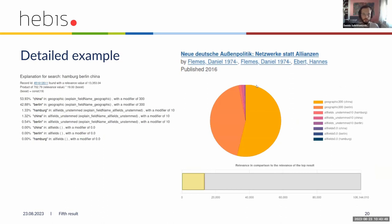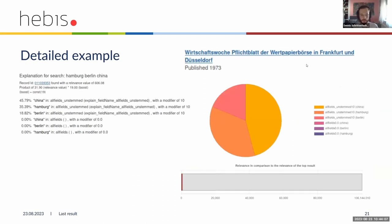The next one has two fields that are very important: geographic, with China and Berlin. But the overall relevancy score is already very low. And the last one here again has China, Hamburg, Berlin — almost like the first — but many of the fields are missing, and the overall relevancy score is really low. So this one is very far from what we'd expect.